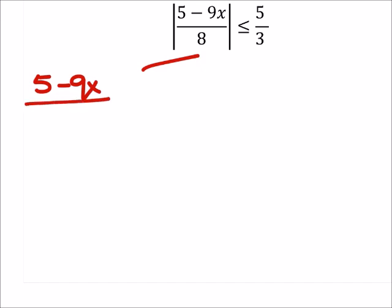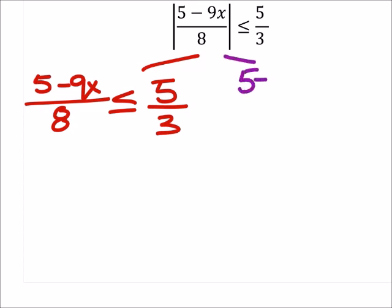We've got 5 minus 9x over 8 is less than or equal to 5/3, and this is just comparing the positive value. But then we're also going to compare the negative values, so 5 minus 9x over 8, and this is compared to negative 5/3. And since we're comparing it to the negative, we're going to flip the inequality there.